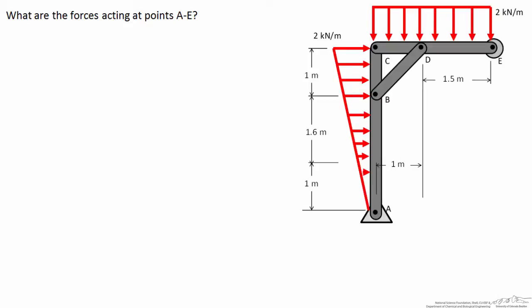In this problem we're being asked to find the forces acting at the five points A through E on this frame. There's a uniform distributed load acting downward on member CDE, and that load has a value of two kilonewtons per meter of length. There's also a load acting horizontally at members A, B, and C, and that varies from zero at point A, increasing linearly up to a maximum value of two kilonewtons per meter at the top.